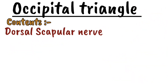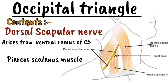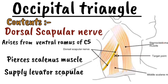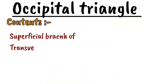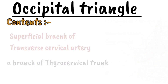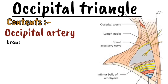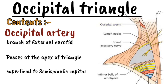The dorsal scapular nerve arises from the ventral ramus of C5 nerve root, pierces the scalenus medius muscle, and runs laterally to supply the levator scapulae. The four cutaneous branches of the cervical plexus are also found here. Additionally, the superficial branch of the transverse cervical artery, which is a branch of the thyrocervical trunk, is present. The occipital artery, a branch of the external carotid artery, passes at the apex of the triangle superficial to semispinalis capitis, with occipital lymph nodes around it.